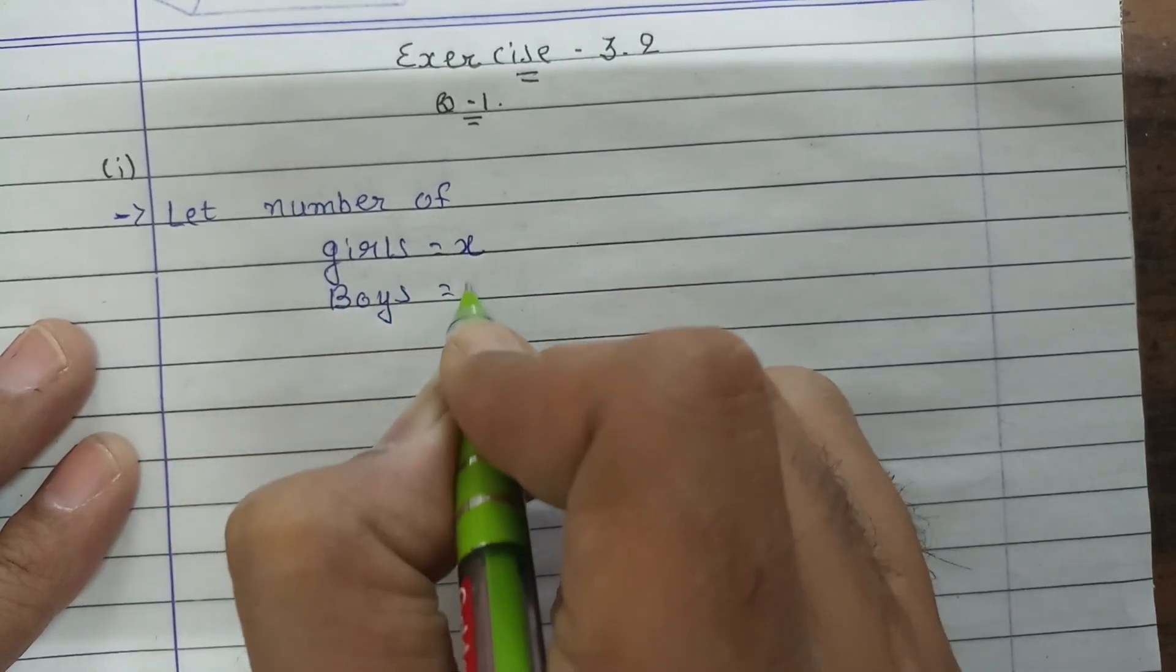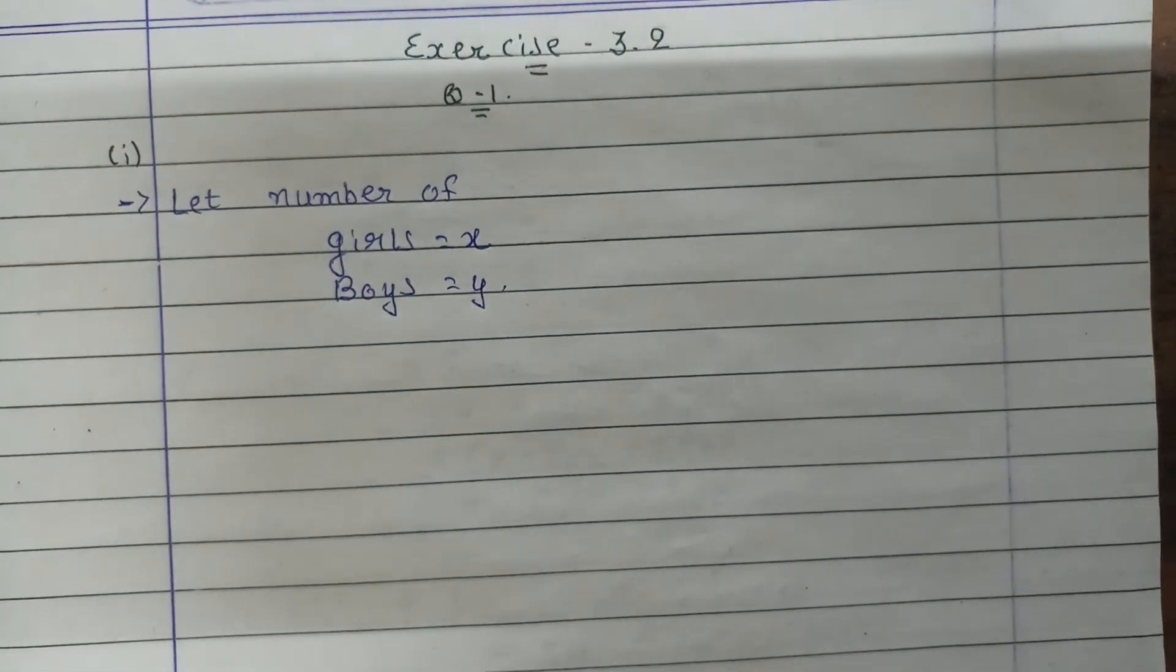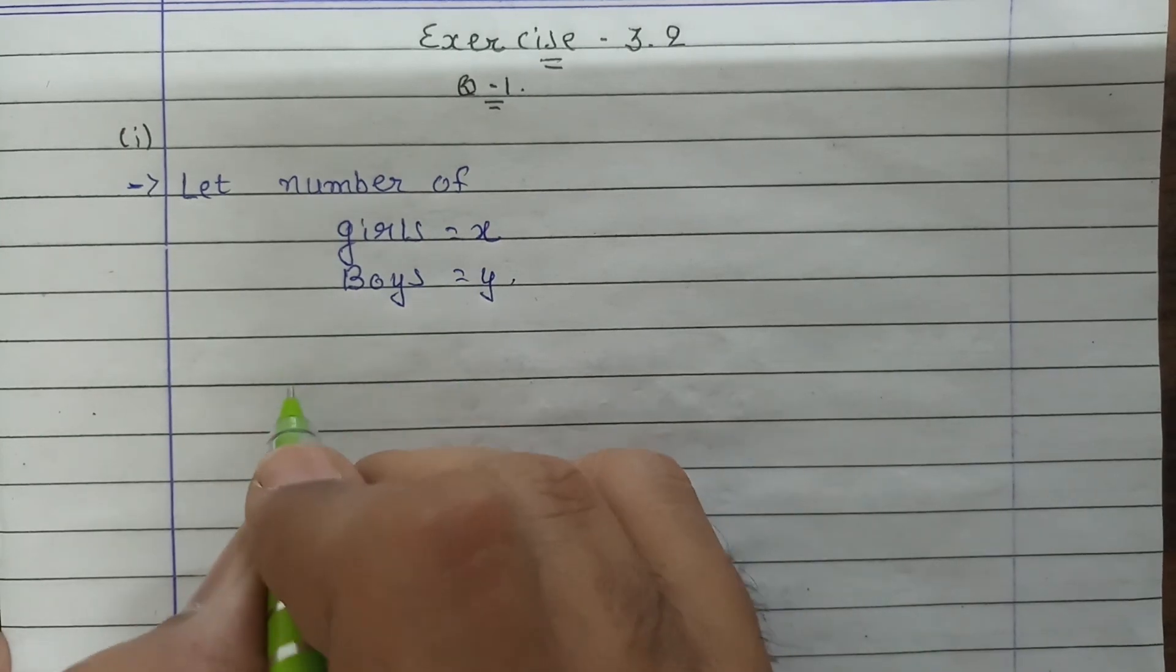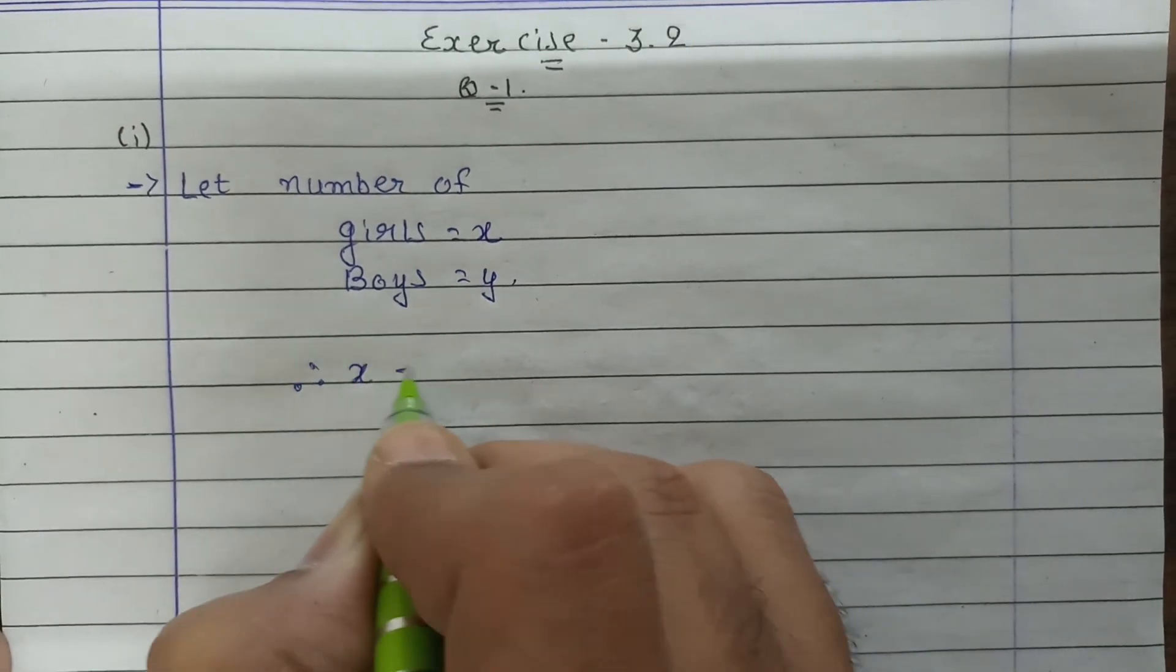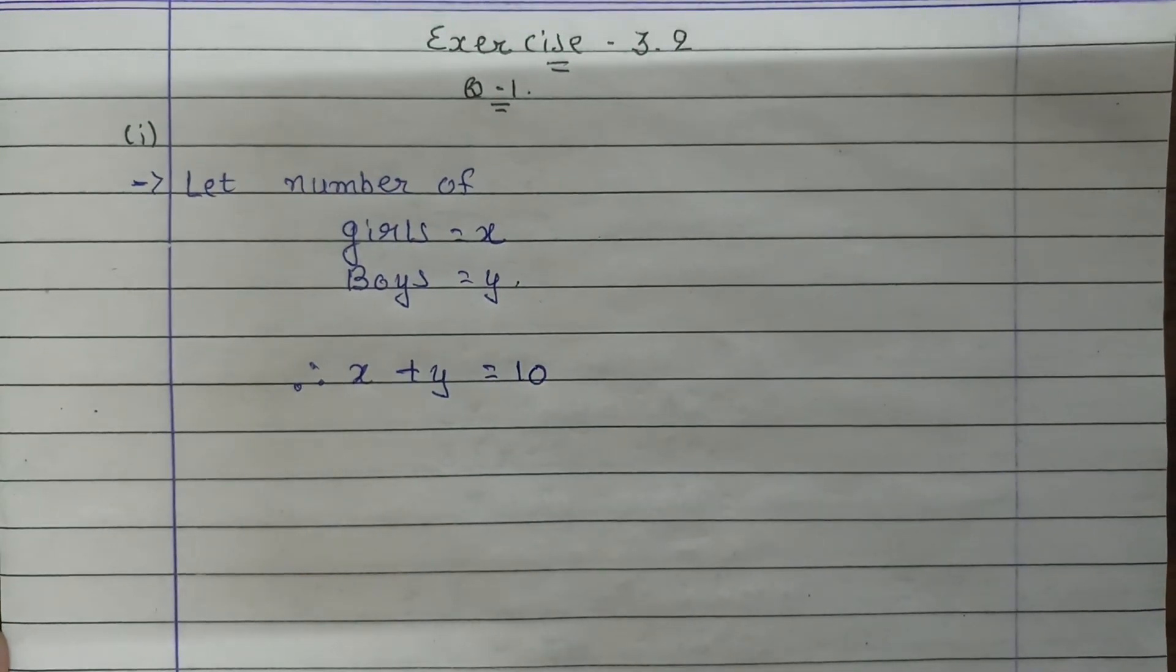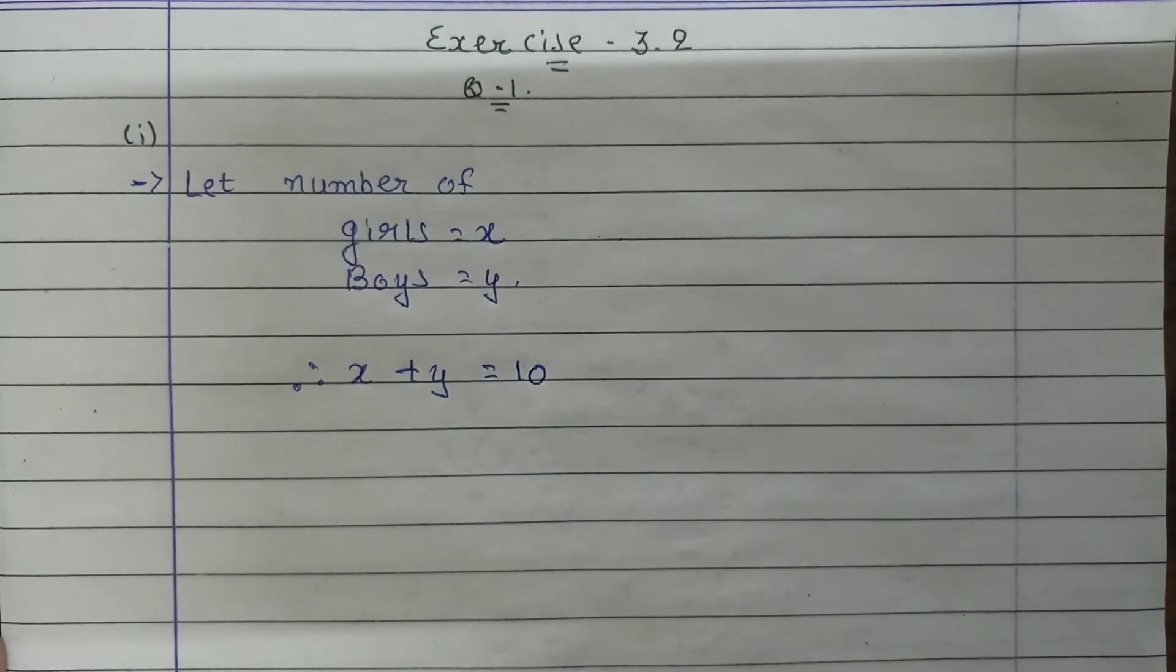Now what we have given is the total number of students are 10. Therefore, number of boys plus number of girls is equal to 10, so x plus y equals 10.